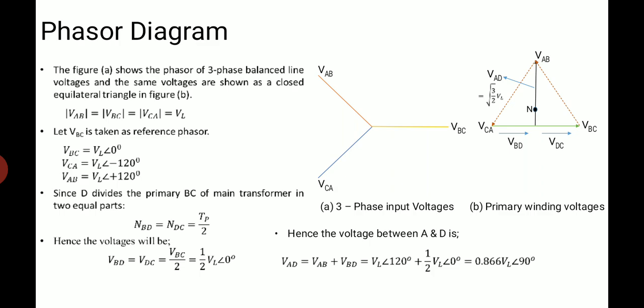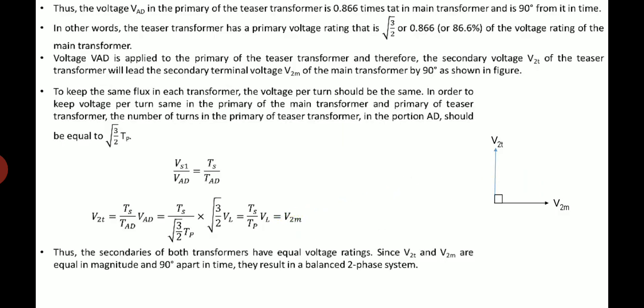As the D point divides primary BC of main transformer in two equal parts, the voltage between A and D is VAD is equal to VAB plus VBD is equal to 86.6 percent of VL angle 90 degree. Thus the voltage VAD in the primary of teaser transformer is 86.6 percent times that in main transformer and is 90 degree from it in time.